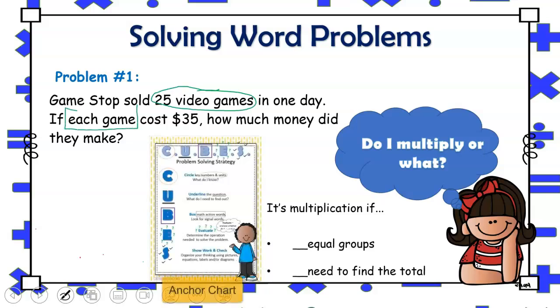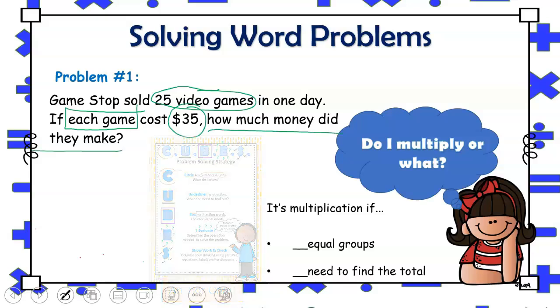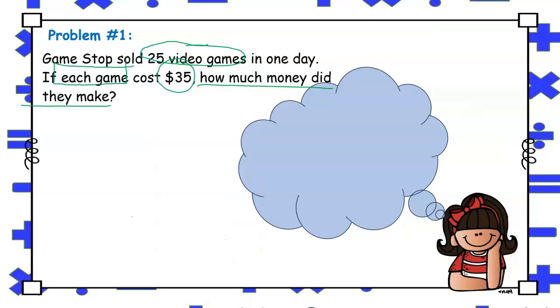Referring to the cube strategy helps students to identify important numbers or information that is needed to solve the problem as well as signal words and identifying the question. Now, let's examine the problem more carefully to see if multiplication is the operation needed to solve for this word problem.